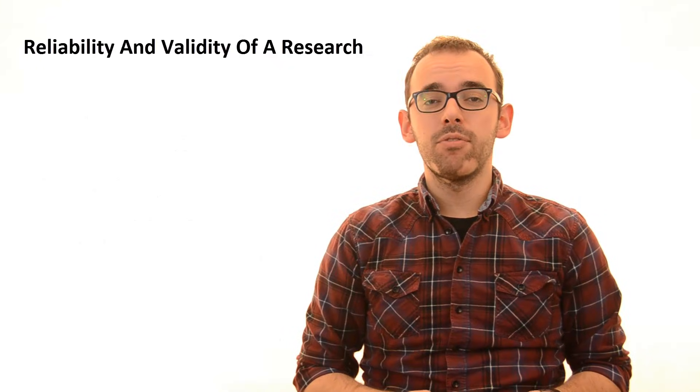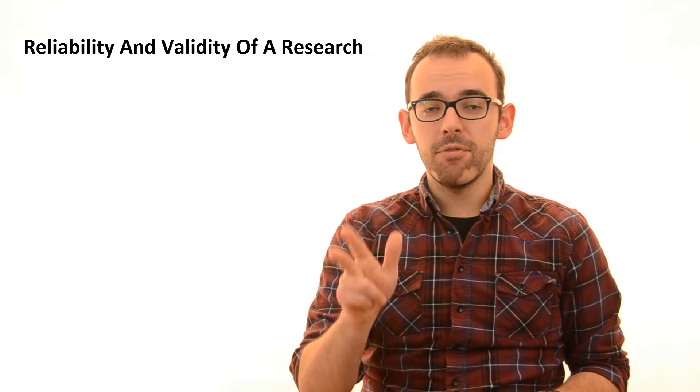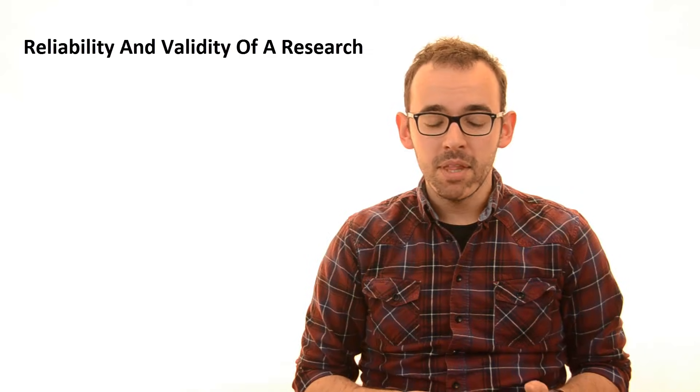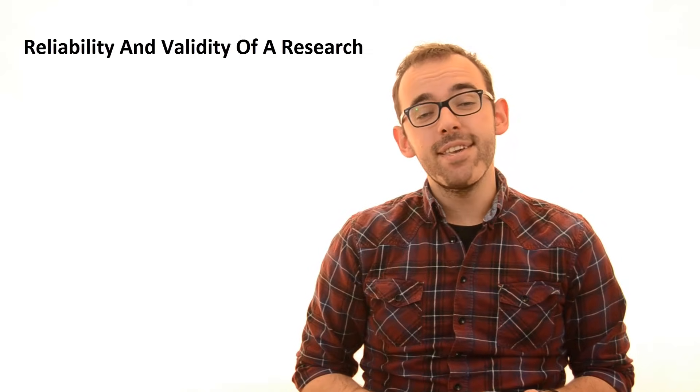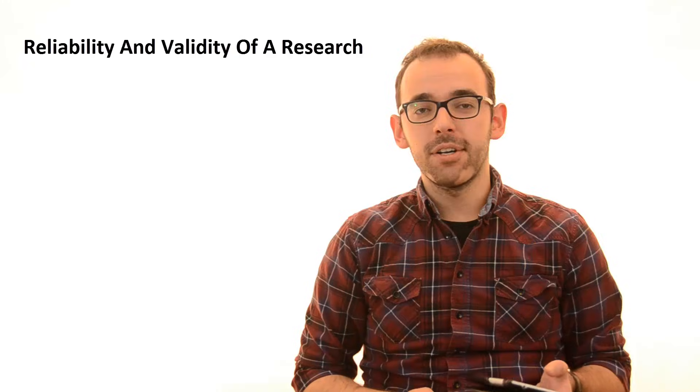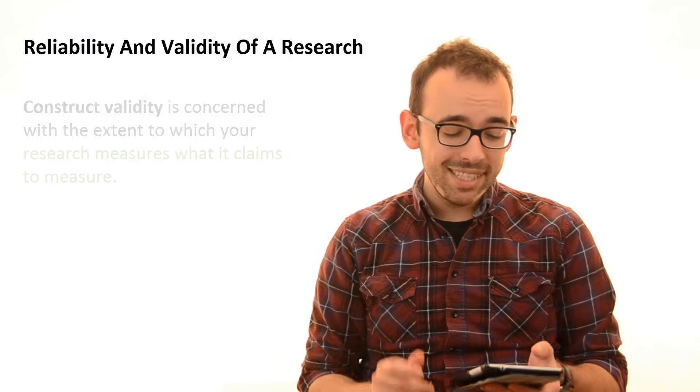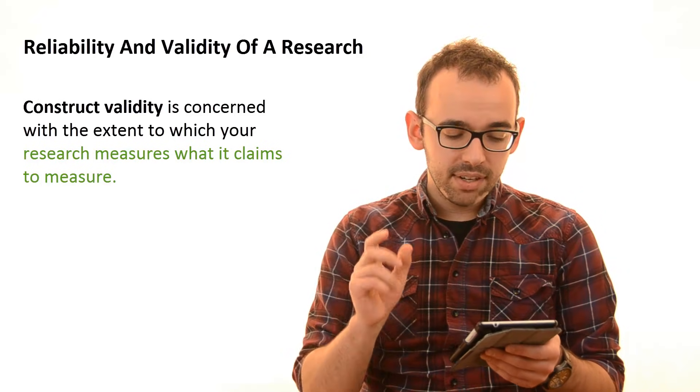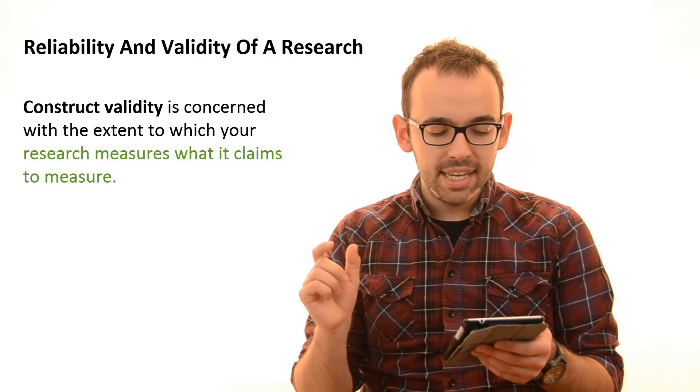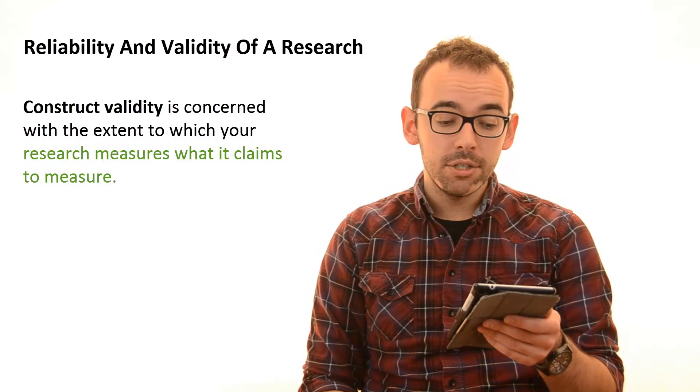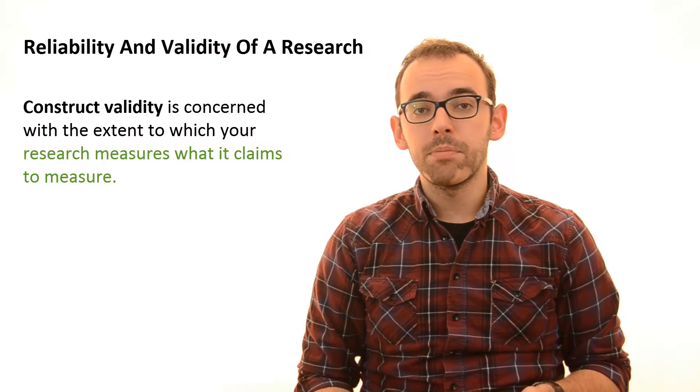Now we come to the validity of a research and we have three different kinds of validity: construct validity, internal validity, and external validity. Let's start with the construct one. This is maybe the simplest one. The construct validity is concerned with the extent to which your research measures what it claims to measure.